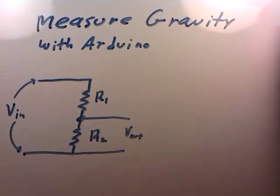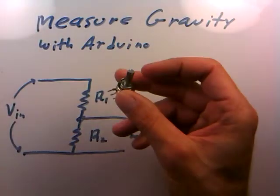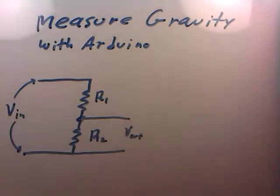We've seen several cases now where if we replace, say, R2 with a potentiometer or a thermistor or one of the photo cells which is sensitive to light, we can get a Vout which depends on that physical quantity.